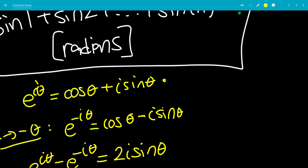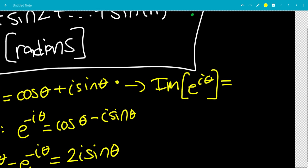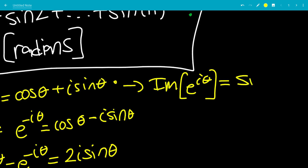Thinking about the first identity, let's take the imaginary part on both sides. The imaginary part of e to the i theta equals: the imaginary part of cosine theta is 0 because cosine theta is real, so we only get sine theta because it's attached to i. So the imaginary part of e to the i theta is equal to sine theta.